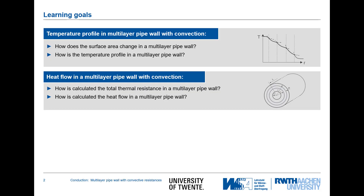What are the learning goals in this video? First, we look again at the temperature profile in this multi-layer pipe wall and also at the temperature profile outside this wall due to convective resistances. Then we will see how to calculate the total thermal resistance in the multi-layer pipe wall in order to calculate the heat flux released by a fluid flowing through the pipe to the environment.